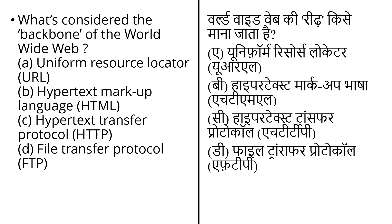The next question is: what is considered the backbone of the World Wide Web? The first option is Uniform Resource Locator, that is URL. A URL is a web address which refers to web resources — it specifies the location on a computer network and the mechanism for retrieving it.